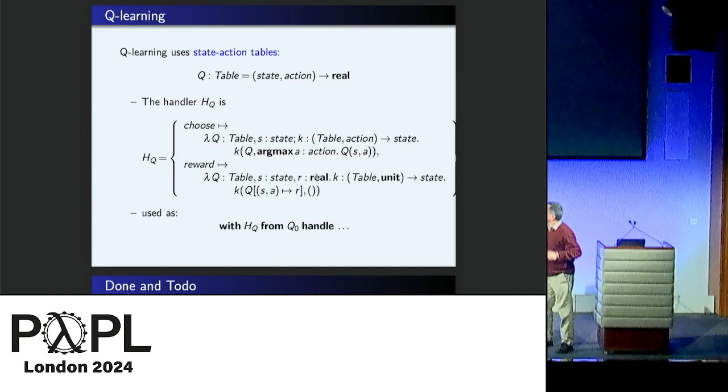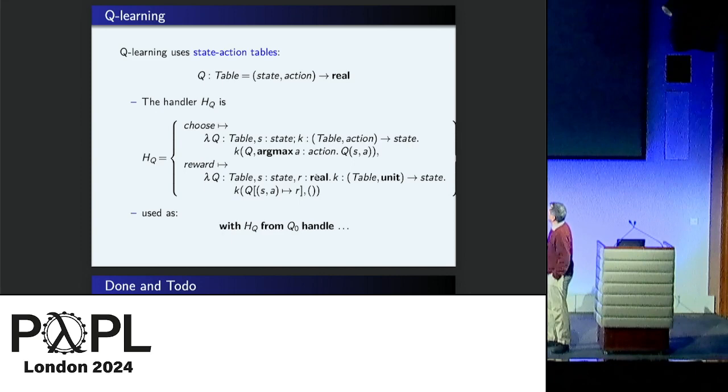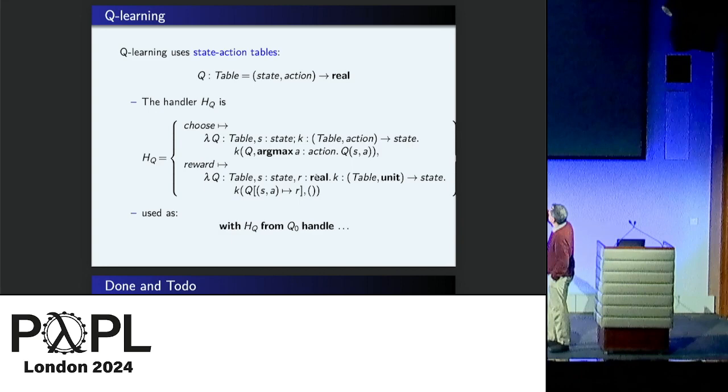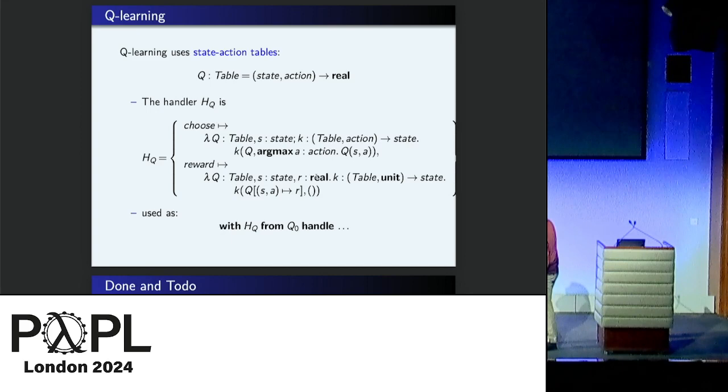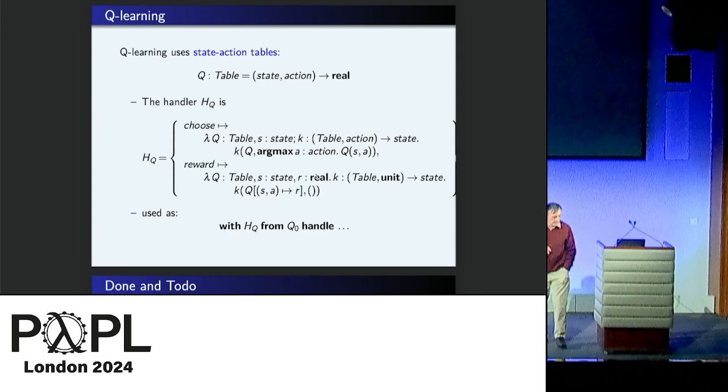So the choose says, I'm just going to choose the action which gives me the maximum reward according to whatever the table knows at the moment. And I'll pass the table on. The reward says, it just says carry on with the table, updated by the reward that you've just learned. And of course it does reward at the same time. So that's it. So that's my examples.